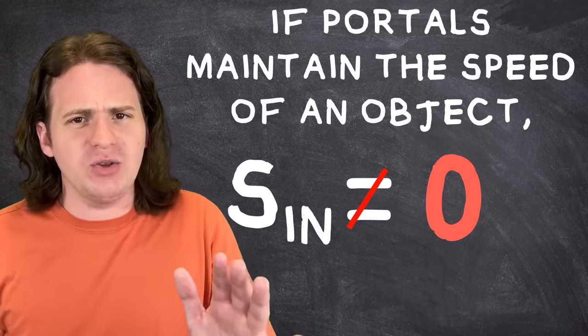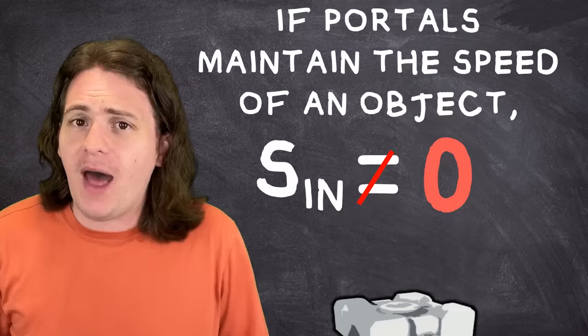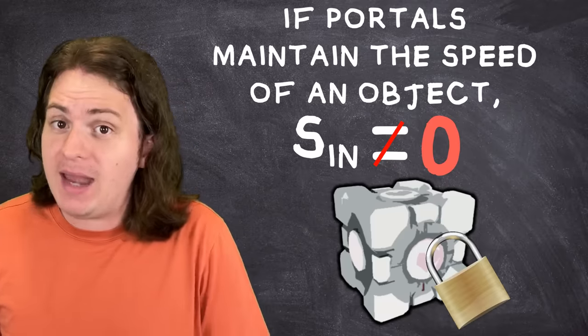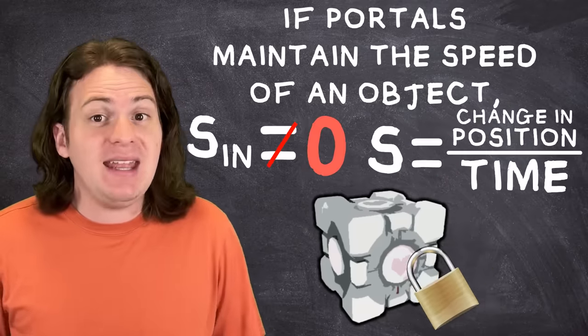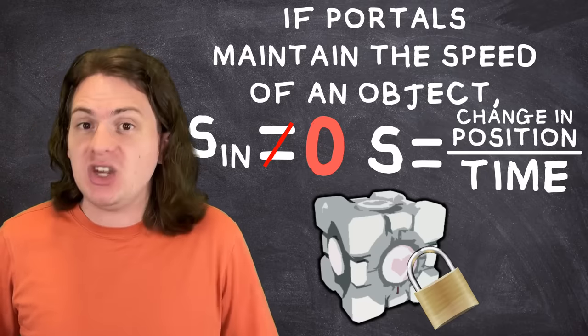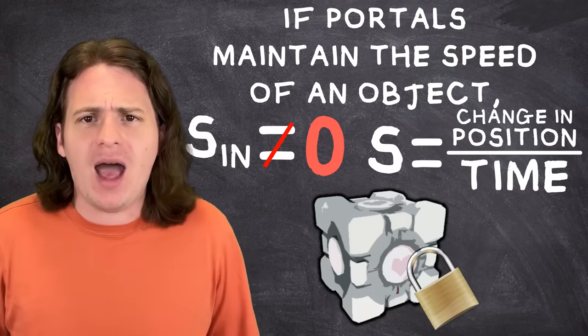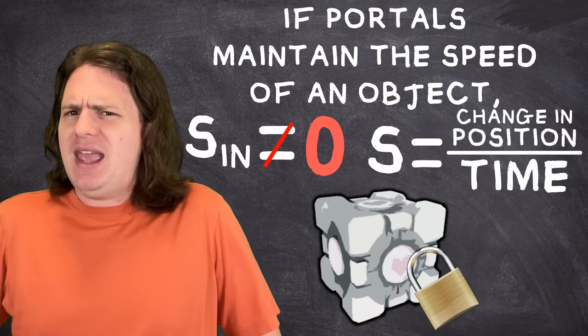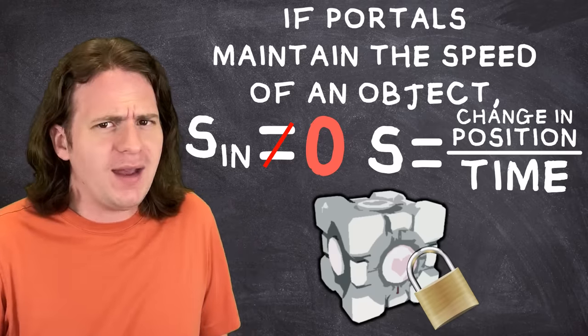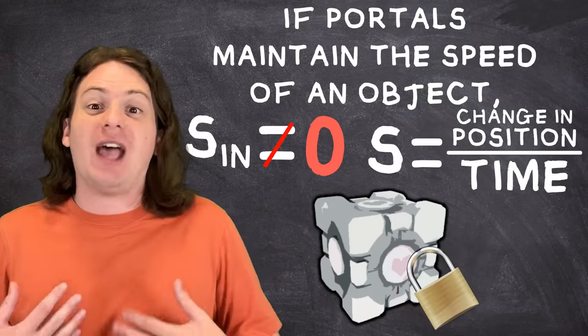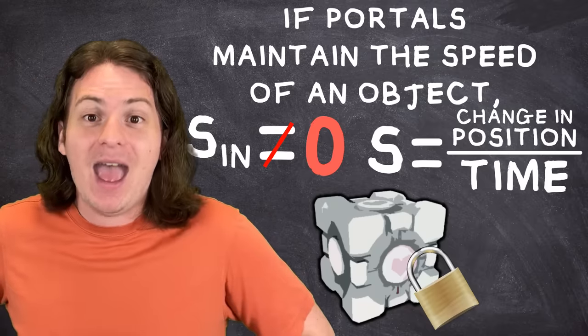Now hang on, I hear you say. We've established that the block isn't moving. And as we all know, speed is defined as a change in position over time. Am I really trying to suggest that a block that is not moving is actually moving? No. No, of course I'm not suggesting that. Albert Einstein is suggesting it. Let me explain.